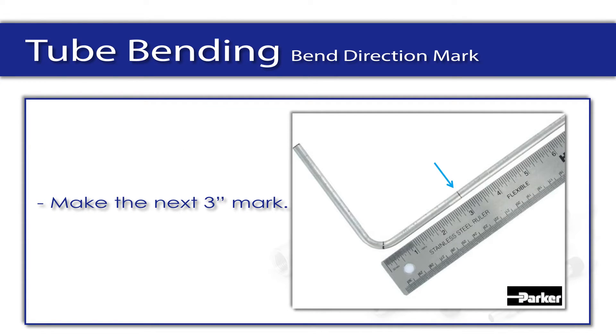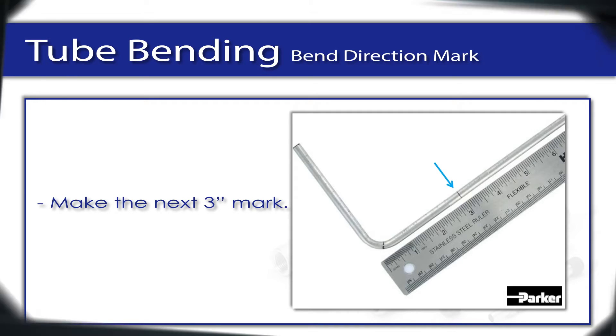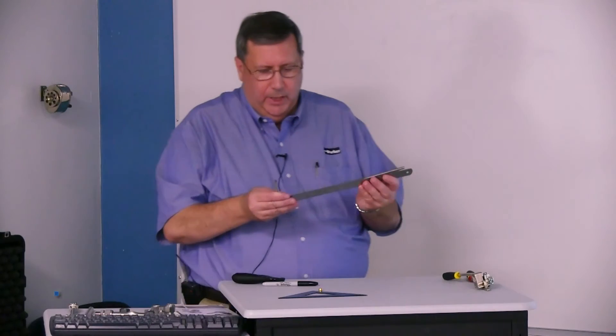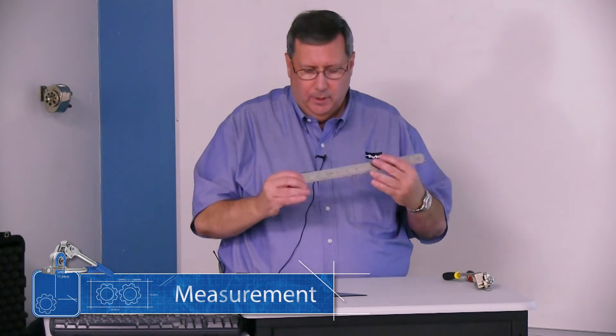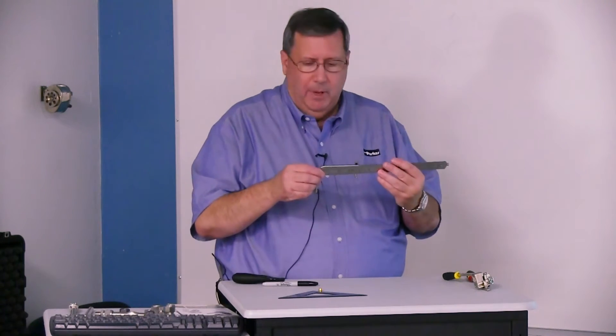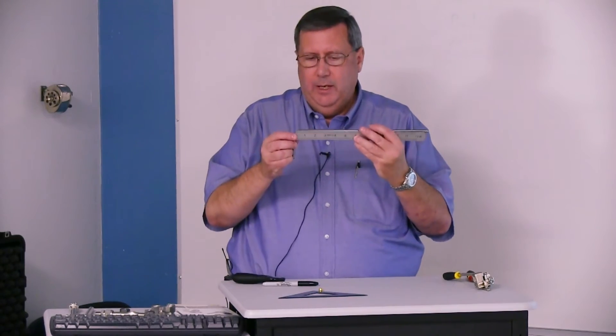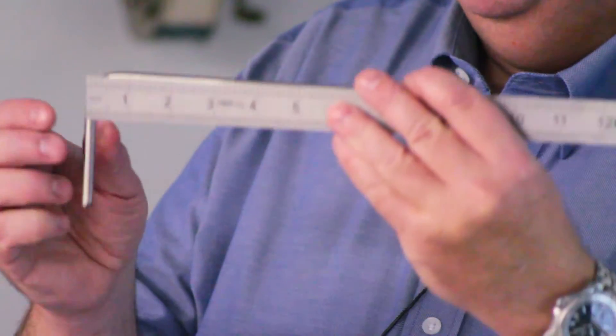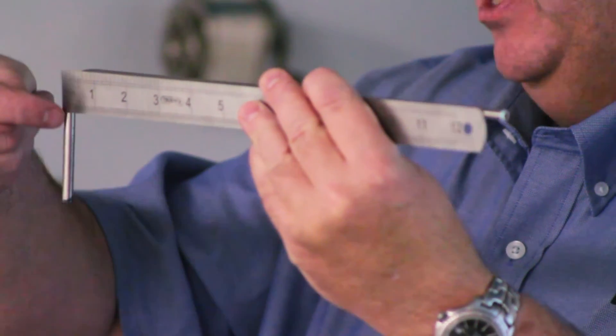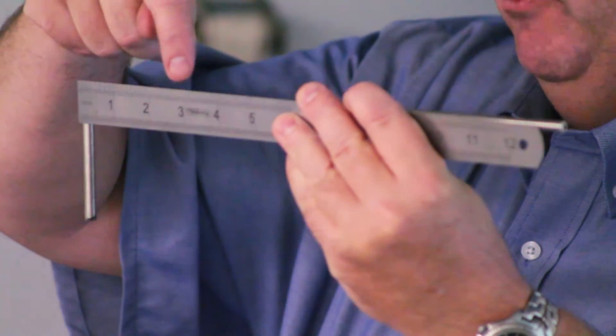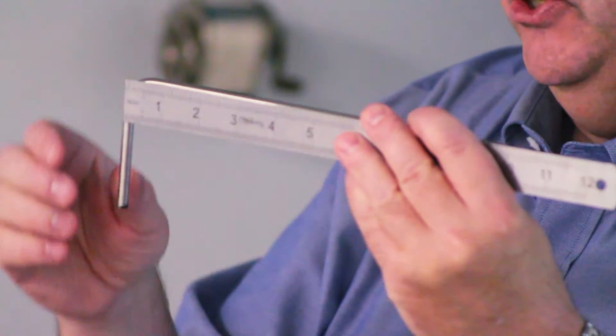Okay, we're ready to make our next mark and set up for our next bend. What we want to do is take the tube like this, line up this edge on the center line of this first leg, and put a mark at three inches.